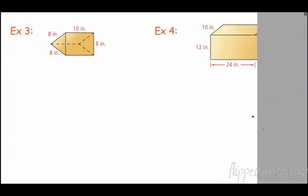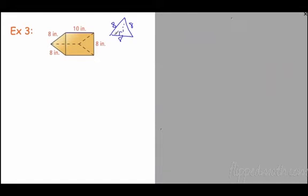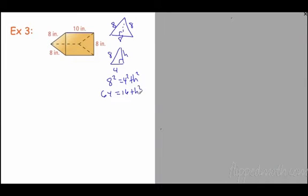For this triangular prism, the height of the prism is 10. The base is an equilateral triangle with sides of 8. To find the height of the triangle, we cut it down the middle, giving us two pieces: one side of 8 and half the base of 4. Using the Pythagorean theorem: 8 squared equals 4 squared plus h squared, so 64 equals 16 plus h squared, giving us 48 equals h squared.